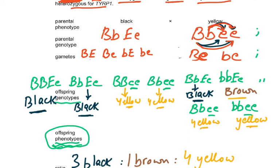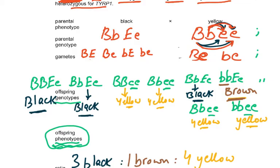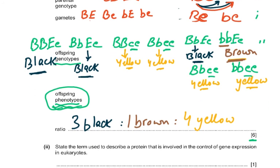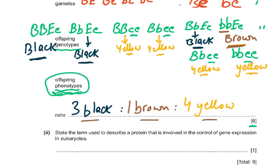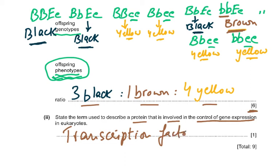Why is one offspring brown? Because it has small B small B, which we established always gives brown. And it has big E small E, so TYRP1 is expressed, producing the brown form of melanin. The ratio is three black, one brown, and four yellow. This was six marks — very achievable if you understand the question. The next part asks for the term used to describe a protein involved in control of gene expression — the answer is transcription factor, which is in your syllabus.